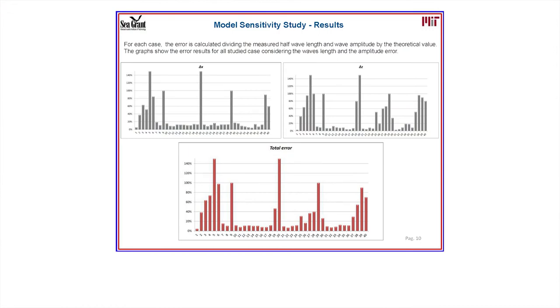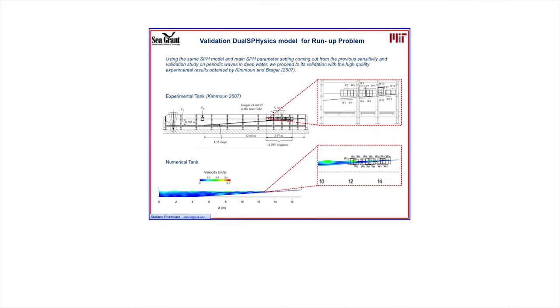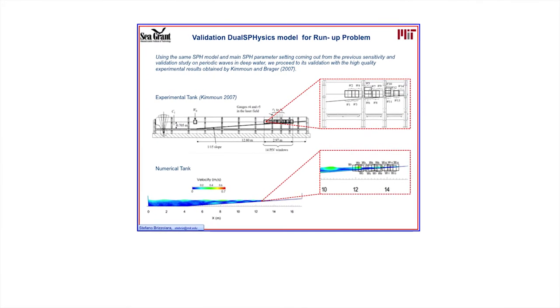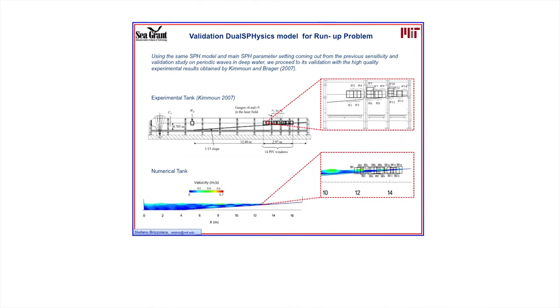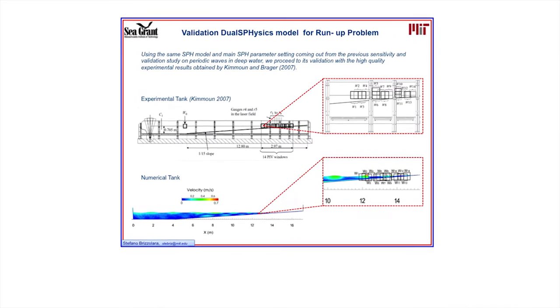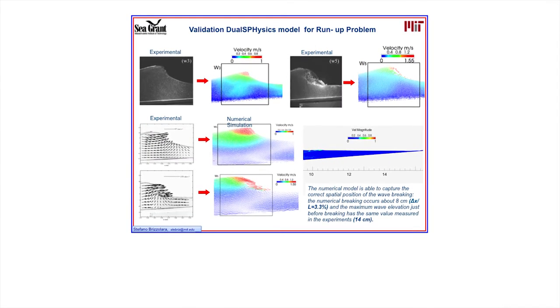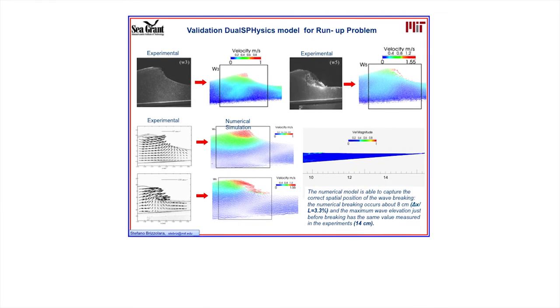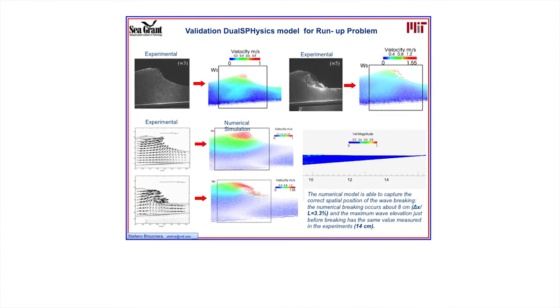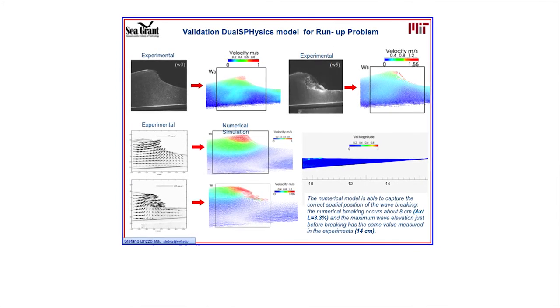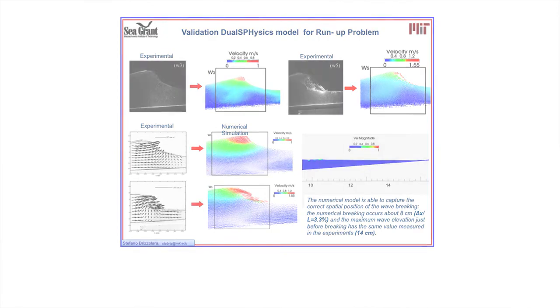In the second step for the validation, we compare our model with experimental data provided by Kim Moon in 2007. We reproduce the experimental tank with a numerical tank and focus on the breaking region. We compare in the same window that we have the experimental data the simulated results, and we find an error in the breaking region with an average of 3.3%.